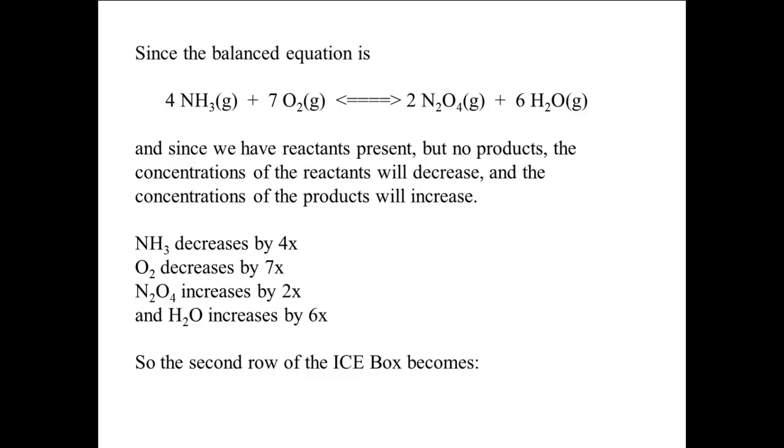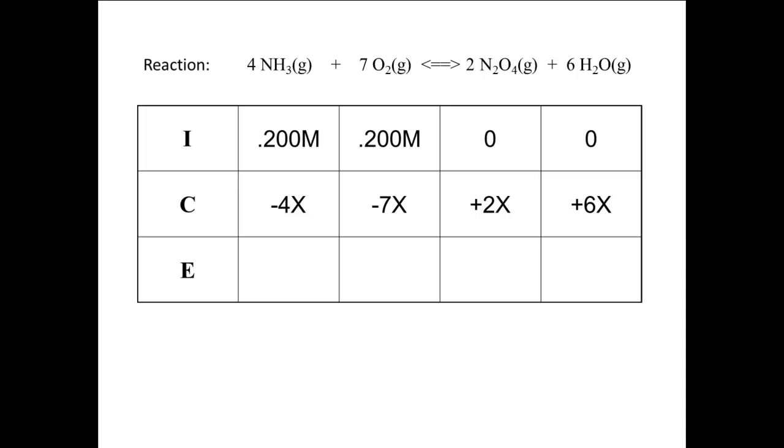So the second row of the ICE box becomes minus 4X for NH3, minus 7X for O2, plus 2X for N2O4, and plus 6X for H2O.